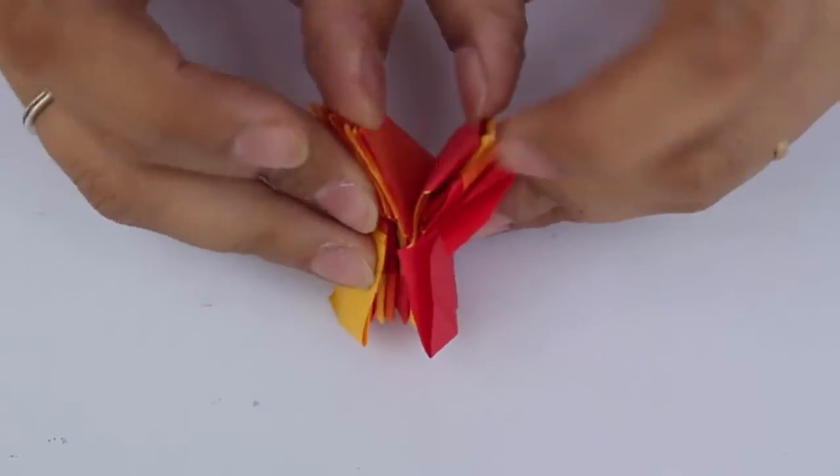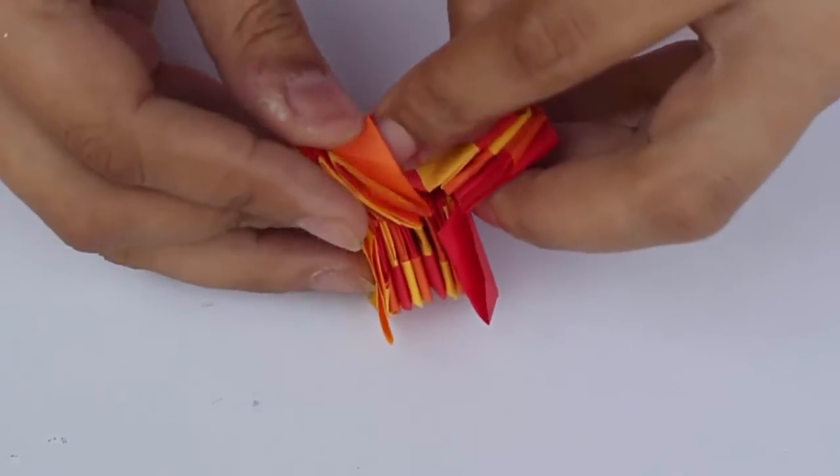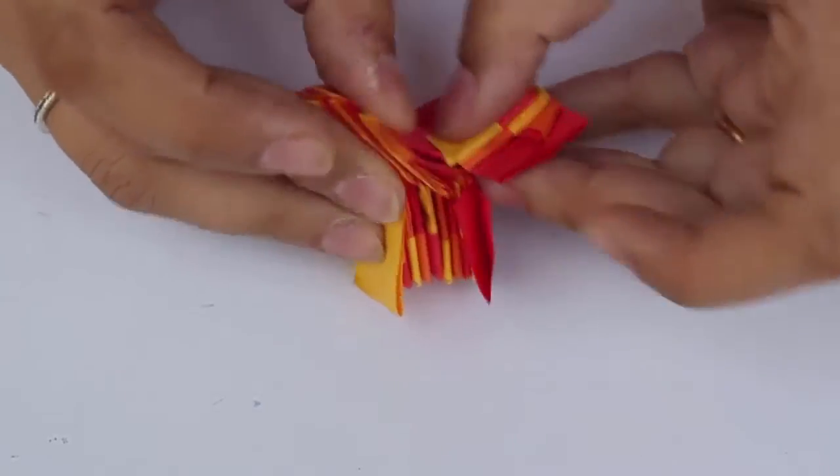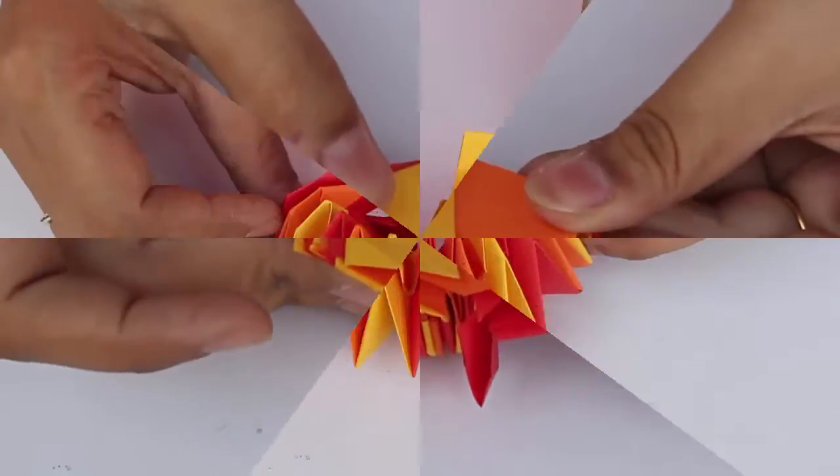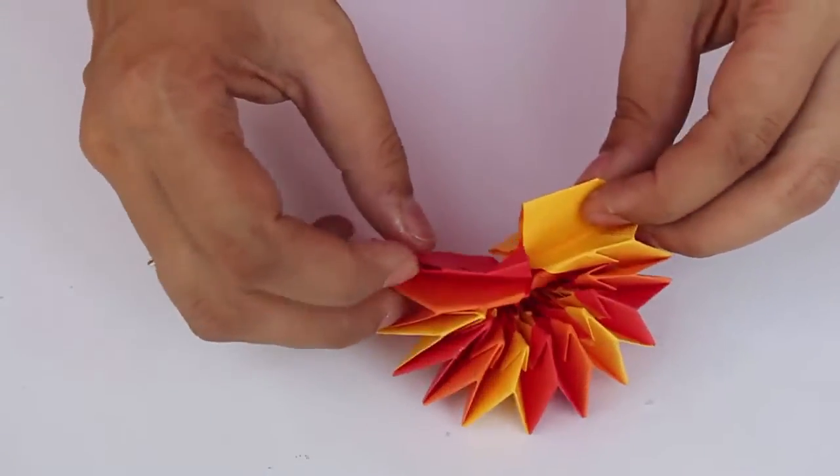If you use thicker paper, it will be easier to twist the flexagon but more difficult to fold the flexagon. So we start by getting the yellow piece into the red piece like this, just as you did with the others.